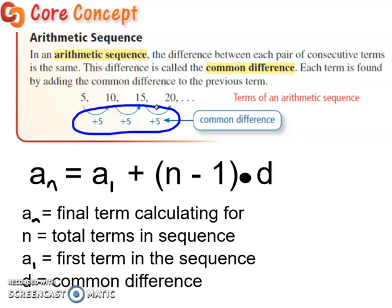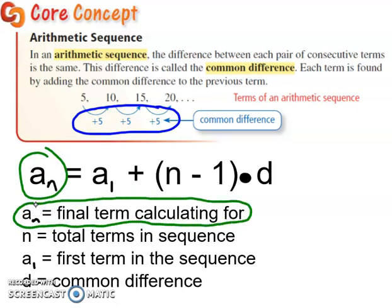But it's okay, because we're going to break it down. So a_n is this first plot right here. It's the final term that you're calculating for. So if the question asks you, what is the sixth term of this sequence? Well, that would be a_6 is equal to... n is the total number of terms in the sequence. So for our example of what's the sixth term, that would be 6.